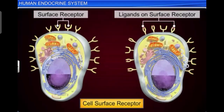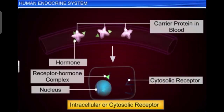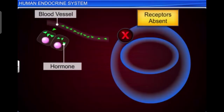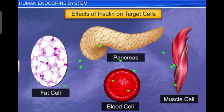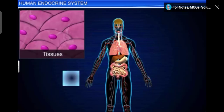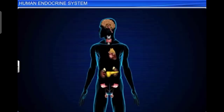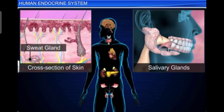Hormone receptors present on the cell membrane of target cells are called membrane-bound receptors, and receptors present inside the target cells are called intracellular receptors. Nuclear receptors are present in the nucleus of the cell. Each receptor is specific to one hormone only, and hence receptors are hormone-specific. The liver and kidney also produce hormones.